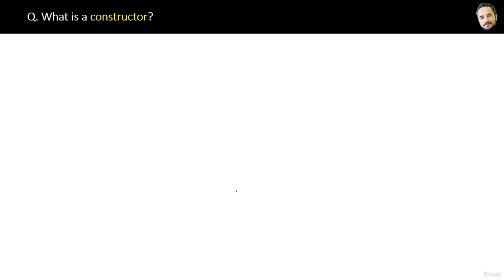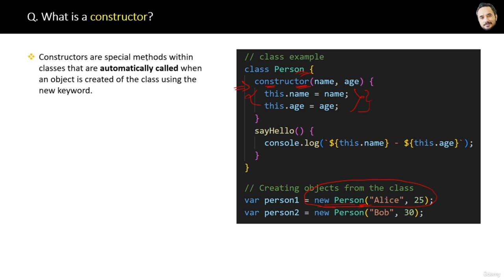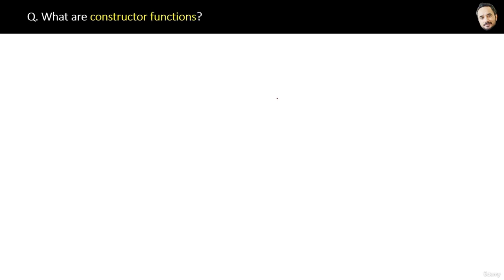What is a constructor? Here is the code of a simple class Person with a constructor keyword. The constructor is nothing but a function of the class that is invoked automatically whenever you create an object of the Person class. The logic inside the constructor is then executed. If you want some code to run automatically whenever an object is created, put that logic inside the constructor. The definition: constructors are special methods within the class that are automatically called when an object is created using the 'new' keyword.